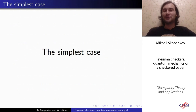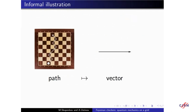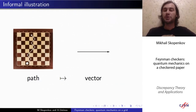Now we are going to define the model for the simplest particular case. On an infinite checkerboard, a checker moves either upwards-right or upwards-left. And to each possible path of the checker, we are going to assign a vector in the plane. We do it as follows.